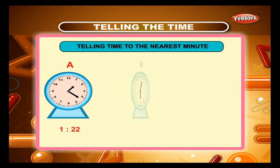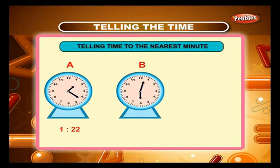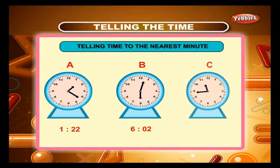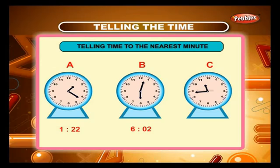Similarly, the time in clock B is 2 minutes past 6, or 6 hours and 2 minutes. The time in clock C is 16 minutes to 12, or 11 hours and 44 minutes.